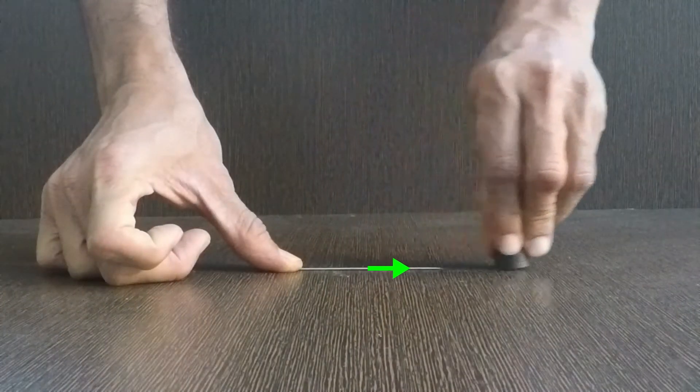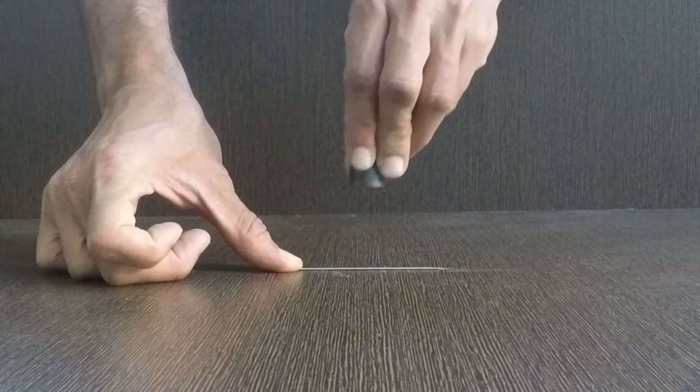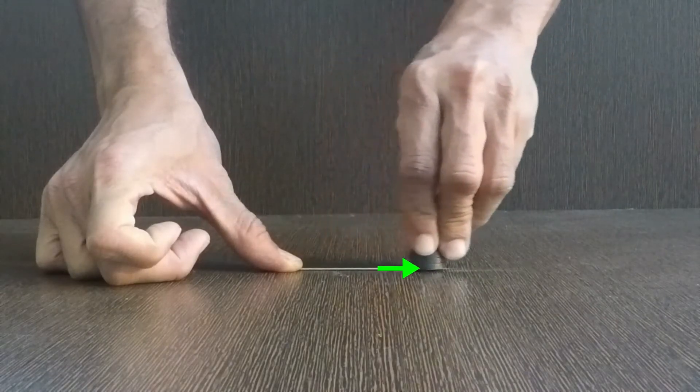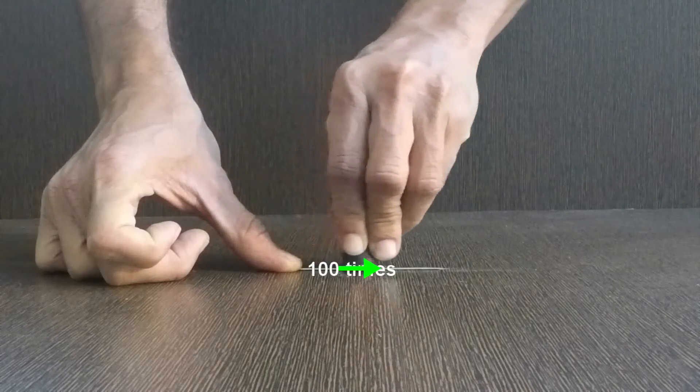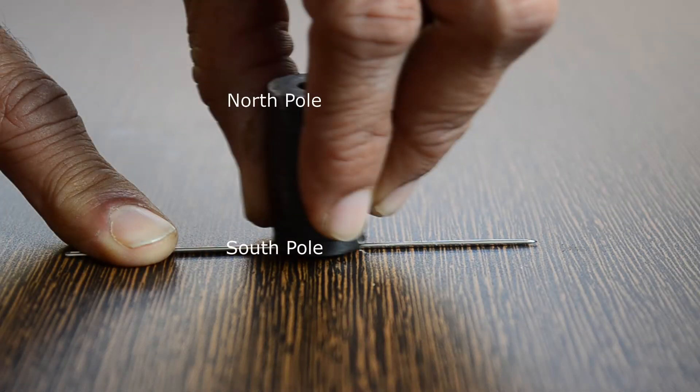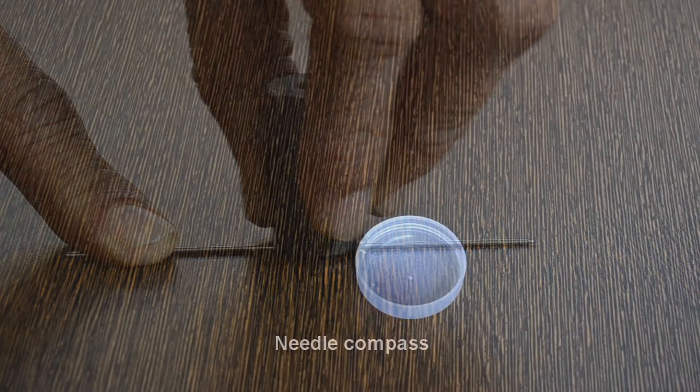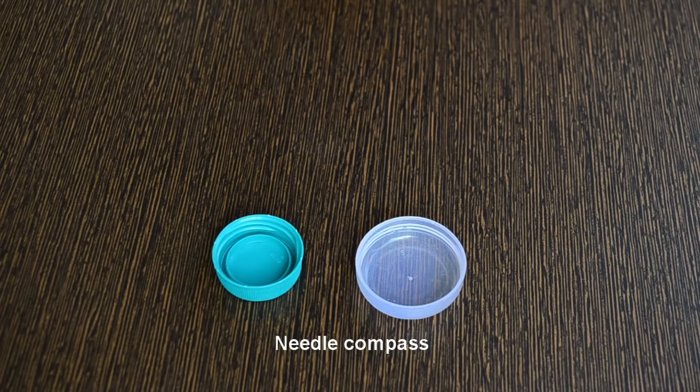The magnet is lifted up and placed back near the hole again. This action is repeated one hundred times. The pointed end of the needle becomes the North Pole. This is the single touch method.